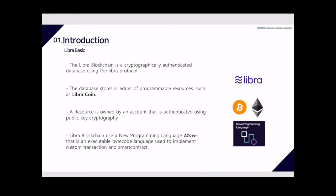The Libra blockchain is a cryptographically authenticated database using the Libra protocol. The database stores a ledger of programmable resources such as Libra coin, and a resource is owned by an account that is authenticated using public key cryptography. Libra is not based on a Facebook account — it is based on an account authenticated using public key cryptography, similar to Bitcoin or Ethereum.